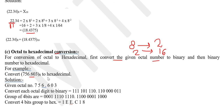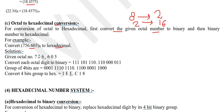For example, take the number 756.603 and convert it to hexadecimal. First, represent octal to binary — we know that octal to binary uses 3-3 bit groups using the 4-2-1 code. Then, while converting binary to hexadecimal, we make 4-4 groups.